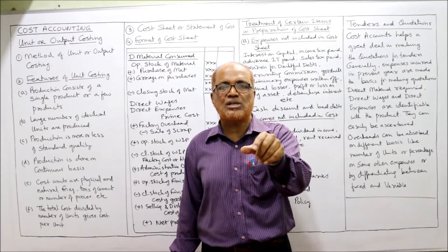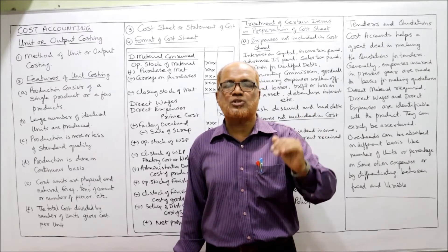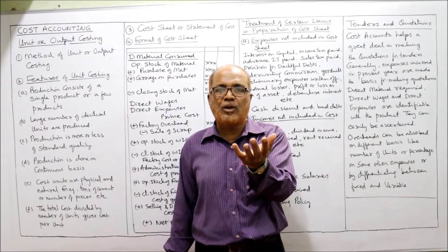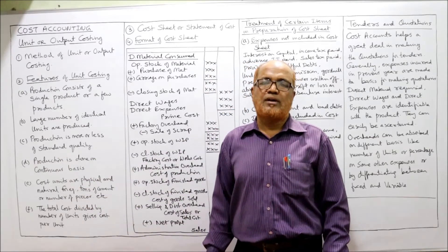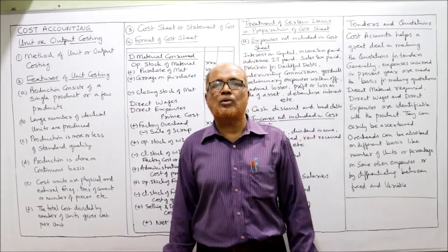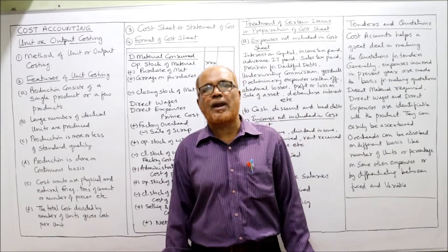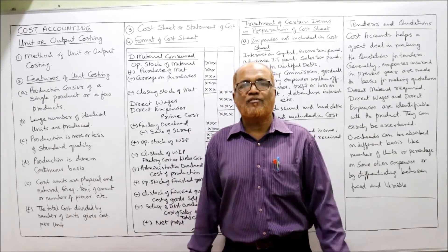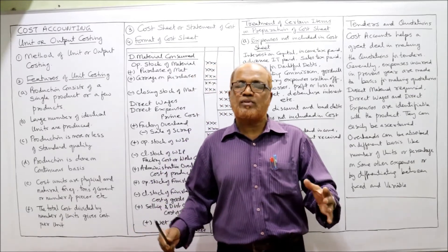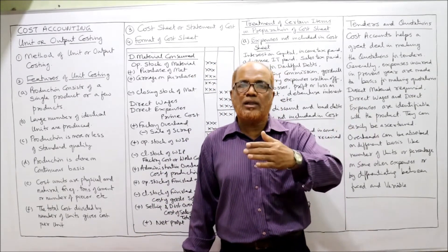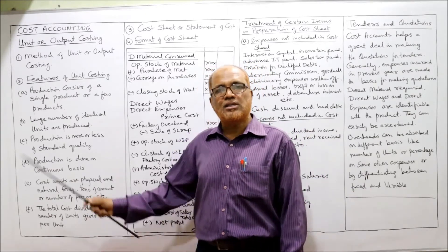This method is applied in industries where goods are continuously manufactured and homogeneous — that is, a single product is produced. The purpose is to find out the total cost of manufacturing and the cost per unit. It is applied in industries such as cement, quarries, mines, brick kilns, and dairy products, where identical units are produced continuously.